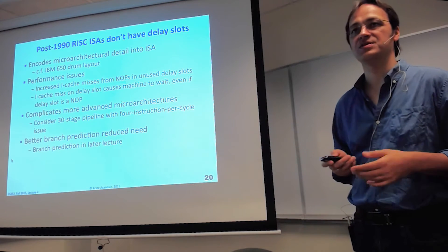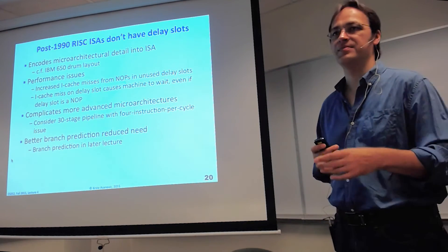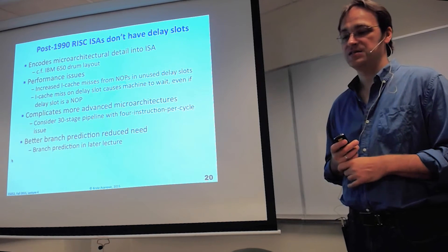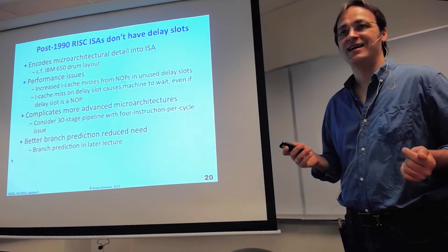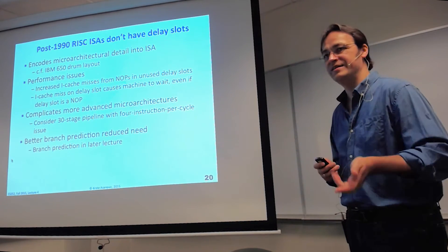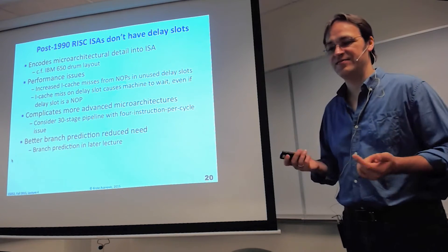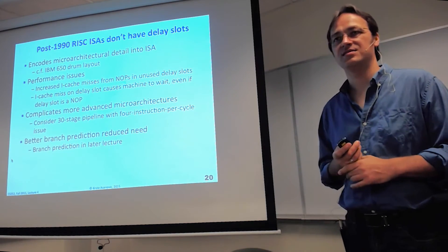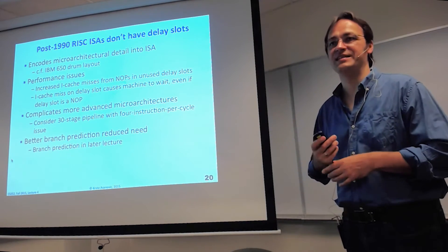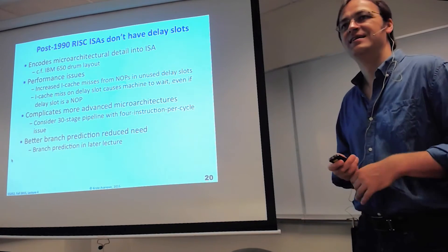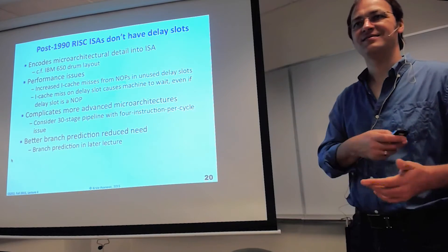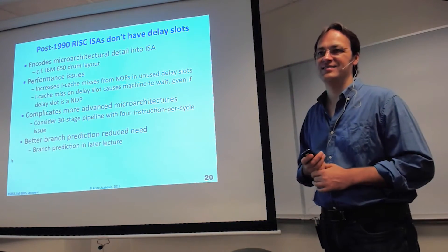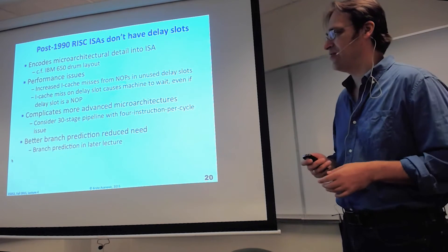ISAs like MIPS, ARMv7, and SPARC — designed in the 1980s — still have delay slots because it's part of their ISA specification. They're living with it now; it's a constant source of irritation. Compiler writers still have to fill the delay slot even though it's annoying for hardware implementers to deal with. ISAs are long-lived — they don't go away. By about 1990 people started having superscalar RISC implementations, and deeper pipelines, which exposed the problems.